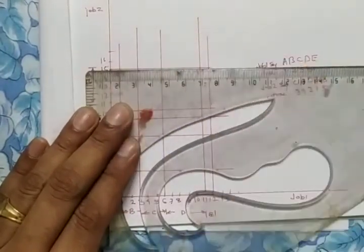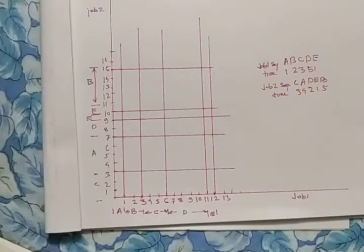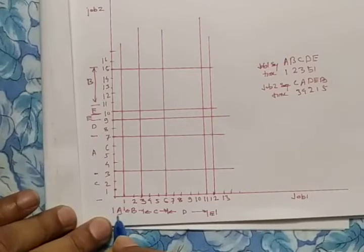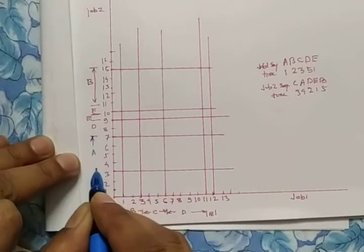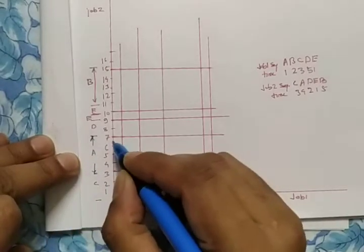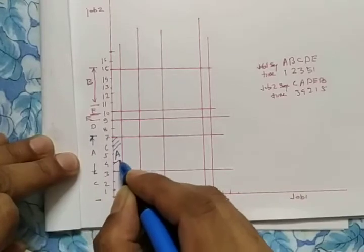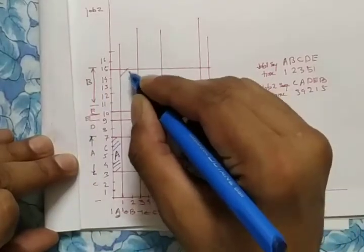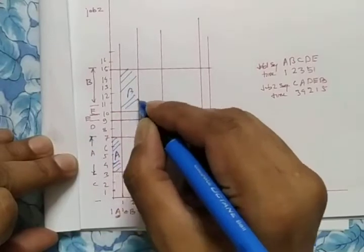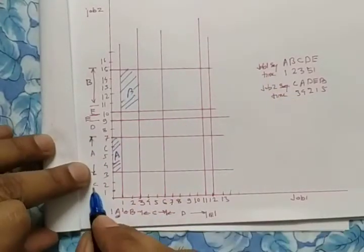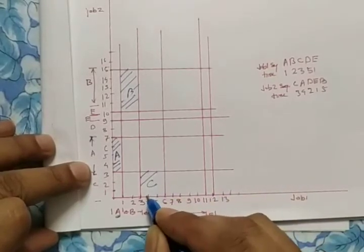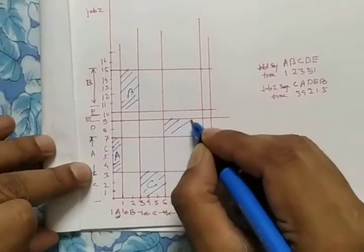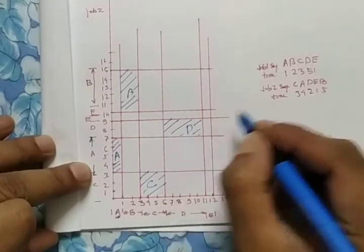After completing the lines, identify the common areas where the same machine appears on both axes. Where vertical and horizontal lines of the same machine overlap, that region is blocked. You will find common areas for Machine A, Machine B, Machine C, Machine D, and Machine E — each representing the zone where both jobs require that machine simultaneously.